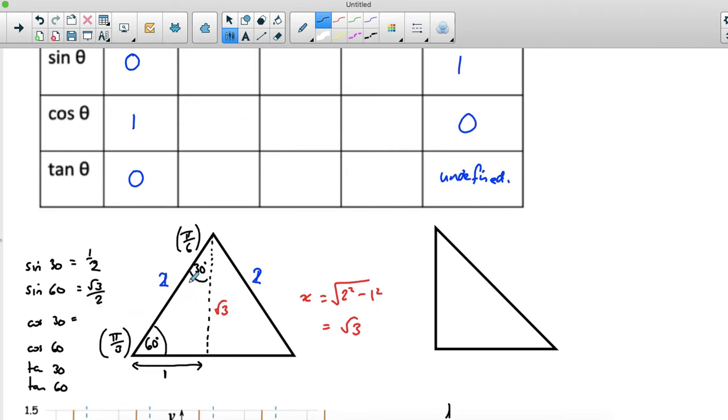Cos of 30 turns out also to be root three over two. Cos of 30 is the same as sine of 60. Cos of 60 is the same as sine of 30. Cos of 60 is the adjacent over the hypotenuse. And then tan of 30 is the opposite over the adjacent, so that's one over root three. And tan of 60 is the opposite over the adjacent, so that's root three over one, or just root three.